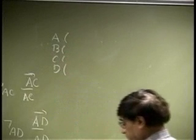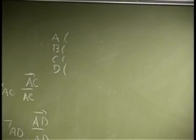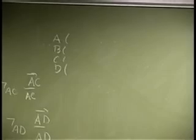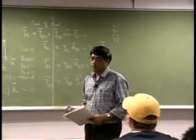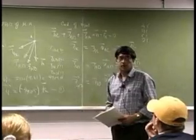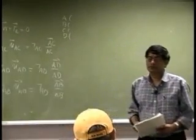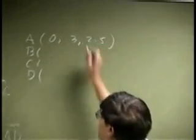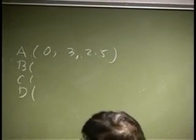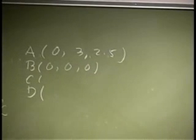We need the coordinates of A, B, C, and D. B happens to be the origin, so that goes to triple zeros.